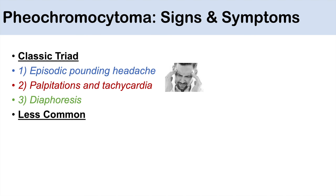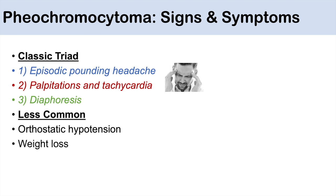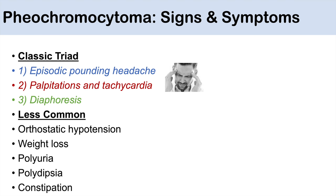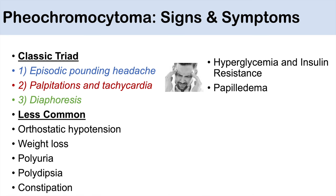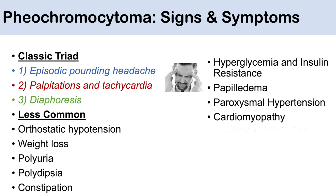Less common symptoms of pheochromocytoma include orthostatic hypotension, weight loss, polyuria and polydipsia, constipation, hyperglycemia and insulin resistance, papilledema, paroxysmal hypertension, and cardiomyopathy similar to Takotsubo due to increased catecholamine exposure.